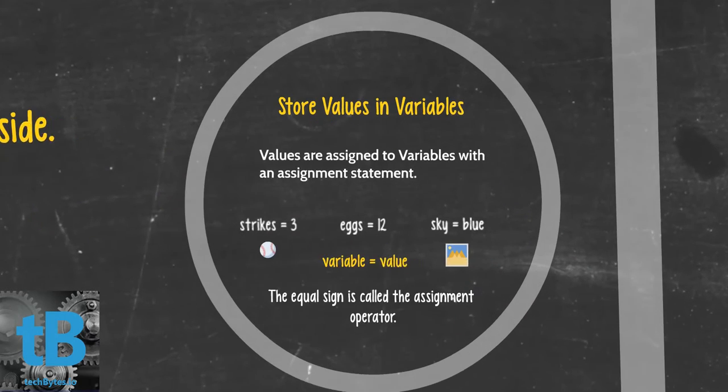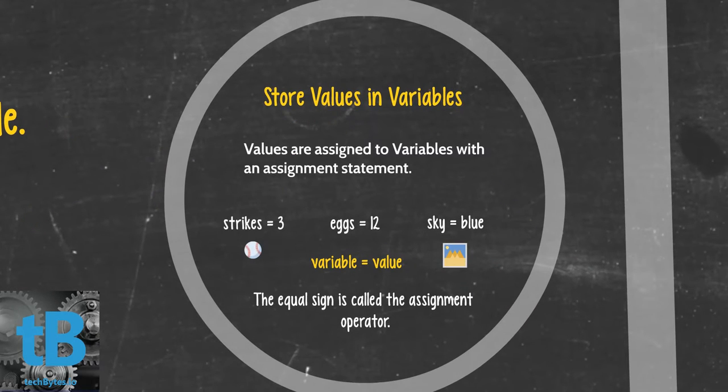Storing values in variables. Values are assigned to variables with an assignment statement. For instance, strikes equals 3, eggs equals 12. The equal sign is called the assignment operator. This is what allows us to assign the number or the integer 3 to the word strikes.